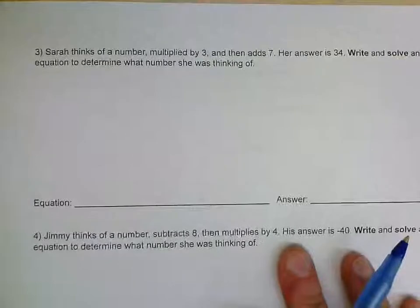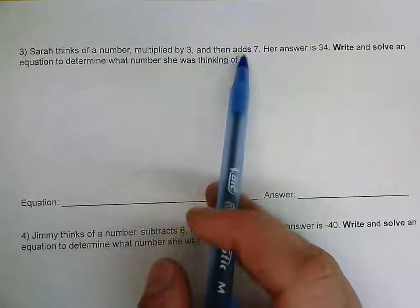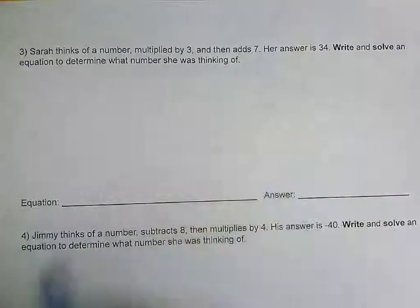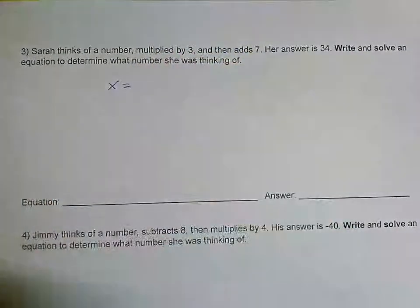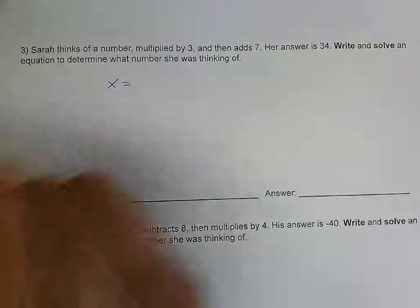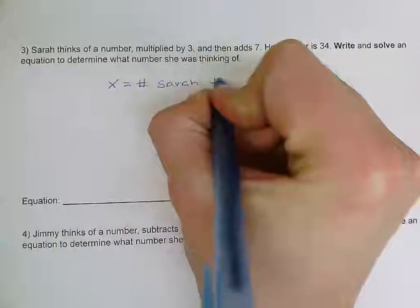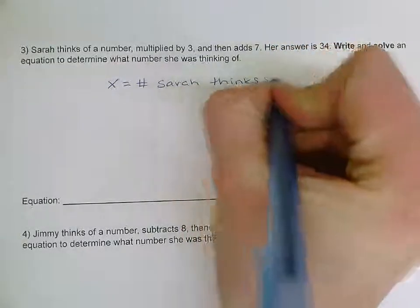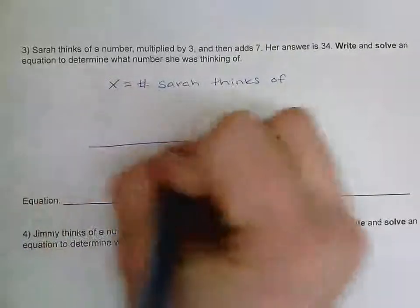Number three: Sarah thinks of a number, multiplies it by three, and then adds seven. Her answer is 34. Write and solve an equation to determine what number she was thinking of. In this case, X is the number that Sarah thinks of, because that's what we don't know.